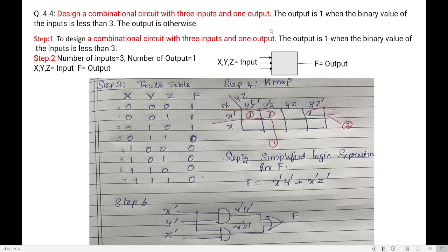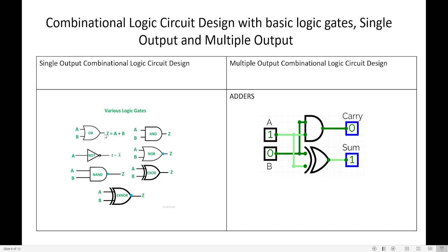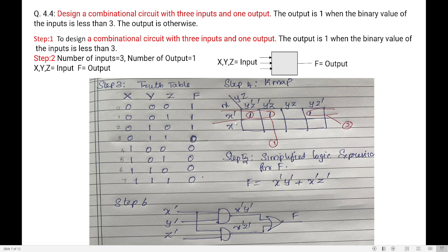This is an example of a single output combinational logic circuit, where you have multiple inputs but your output is single. Thank you.